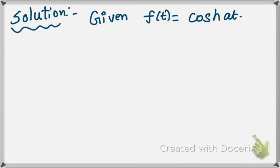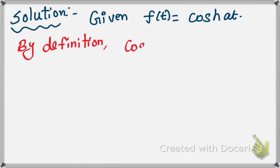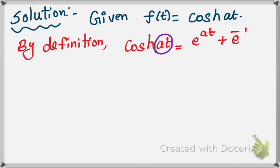By definition, cosh(at) is equal to e power AT plus e power minus AT divided by 2. Remember this formula: cosh(at) equals e^(at) plus e^(-at) divided by 2. Now, taking the Laplace transform on both sides.